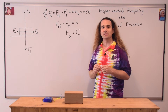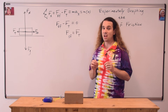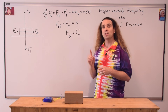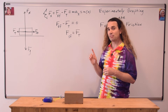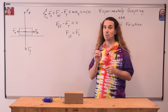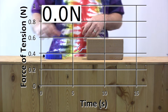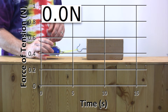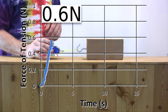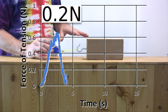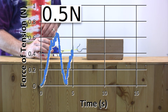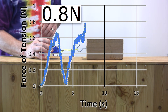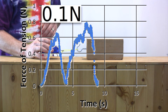Which means, as long as the block is not moving, the force of static friction and the force of tension have the same magnitude. Now, as I pull on the force sensor, we get a graph of the force of tension as a function of time. And because the block isn't moving, this is also a graph of the force of static friction as a function of time.